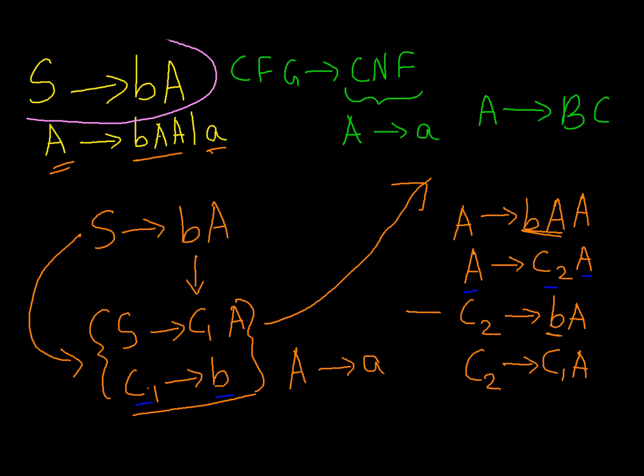So for S produces bA, this is bA, the solution is this. And for this production, the solutions are...